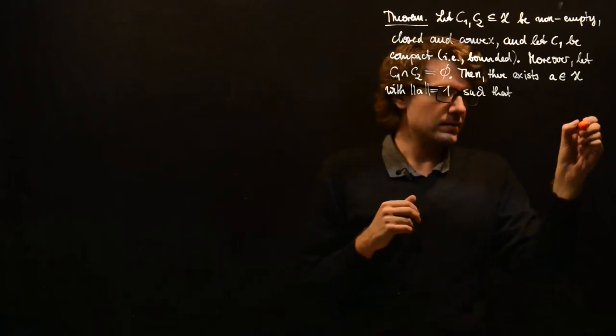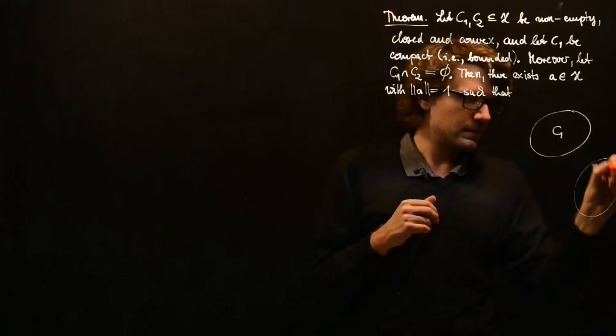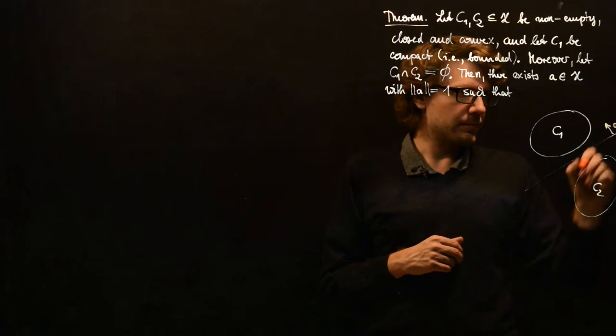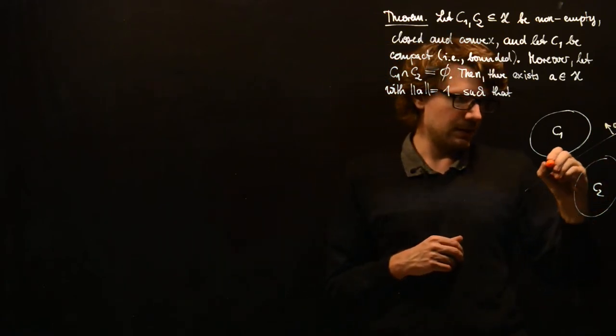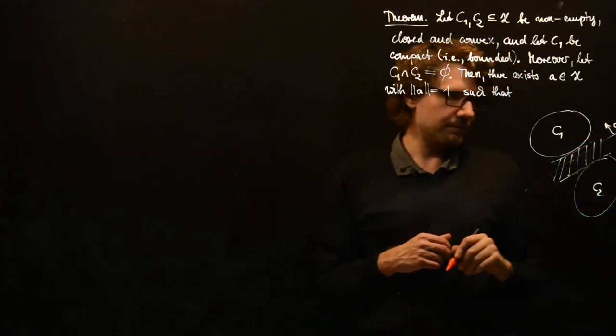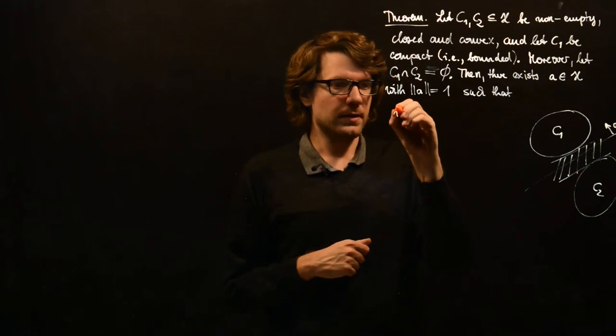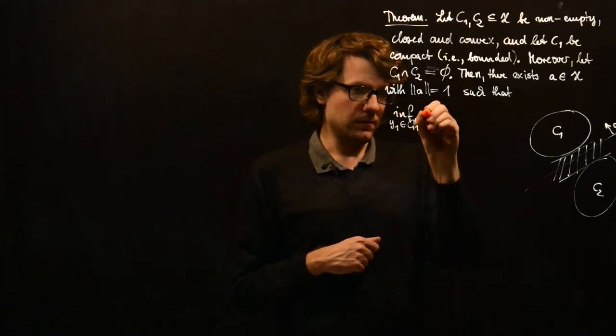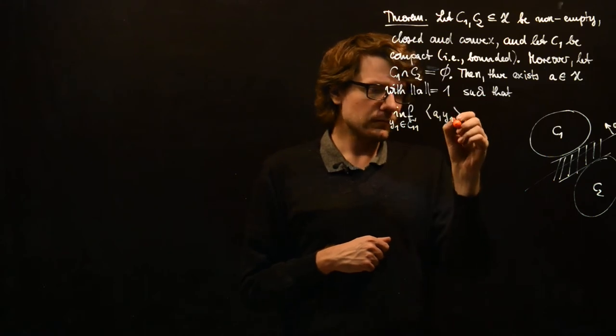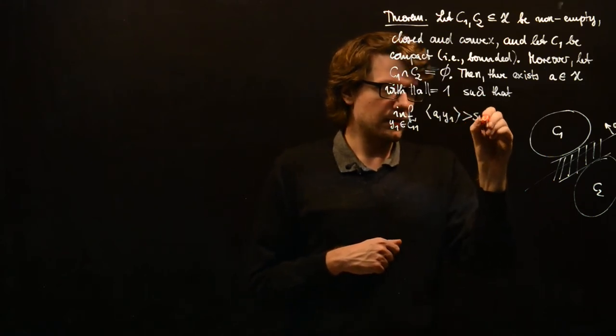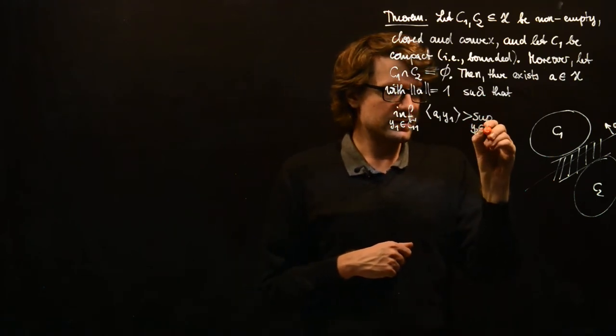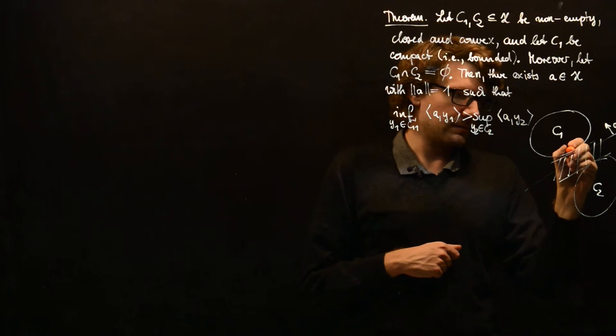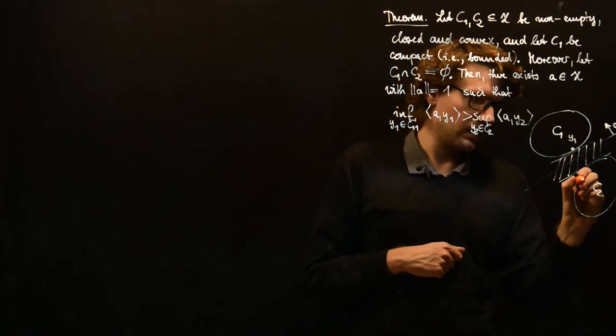And what is the goal? We have some set C1 here, we have a set C2, and we want to find a separating hyperplane. Normal vector here points in the direction of C1 and we want to have this buffer in between. So we want to have the infimum of y1 in C1 over A·y1 to be bigger than the supremum of y2 in C2 of A·y2. So whenever we have a point here, y1 and y2, then there should be this buffer in between.